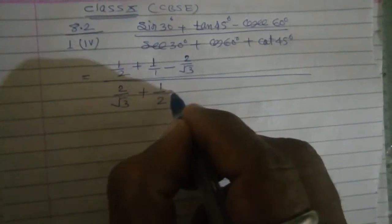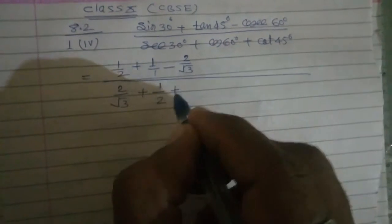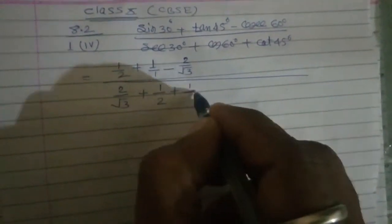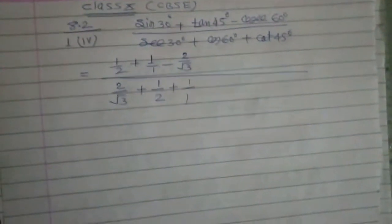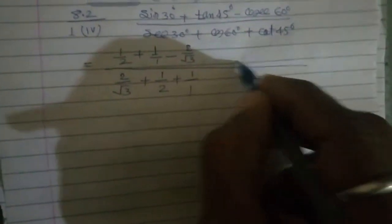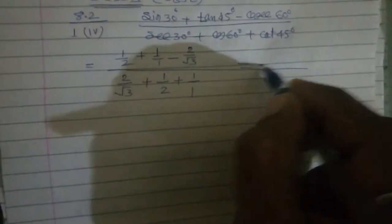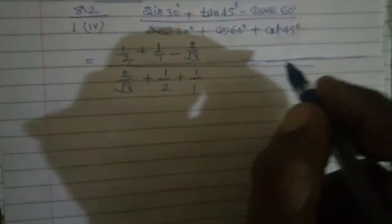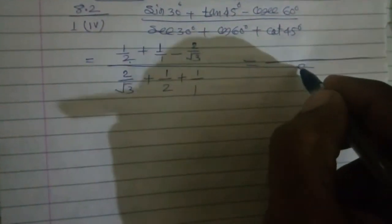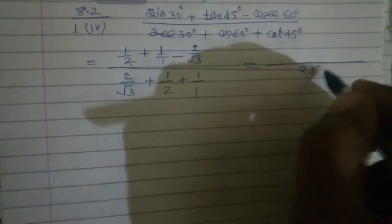And यह हो गया cot 45 जो कि 1 होता है। ठीक है ना? अब ऊपर का हमारा LCM क्या आएगा? Denominators हैं 2, 1 और root 3 — इसका LCM क्या आएगा? 2 root 3.